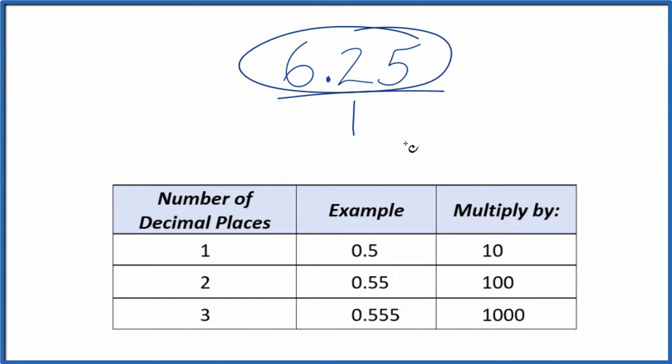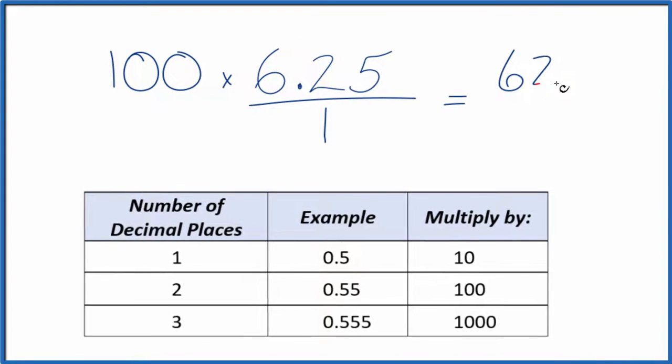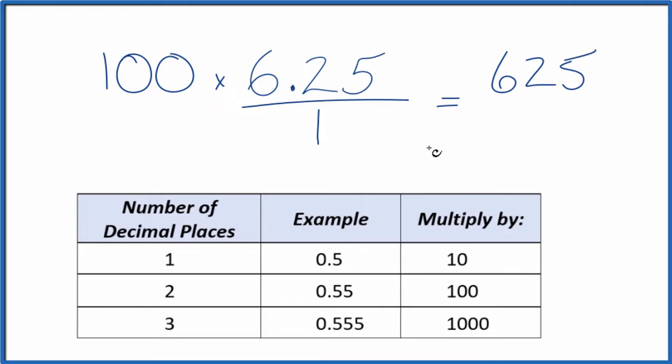What I need to do is get the numerator here to be a whole number, and I can do that by multiplying times 100. That's because 100 times 6.25 equals 625. Now I have my whole number, but I can't just multiply the numerator by 100. I also need to multiply the denominator by 100. That's because 100 divided by 100 is just 1, so we multiply by 1.